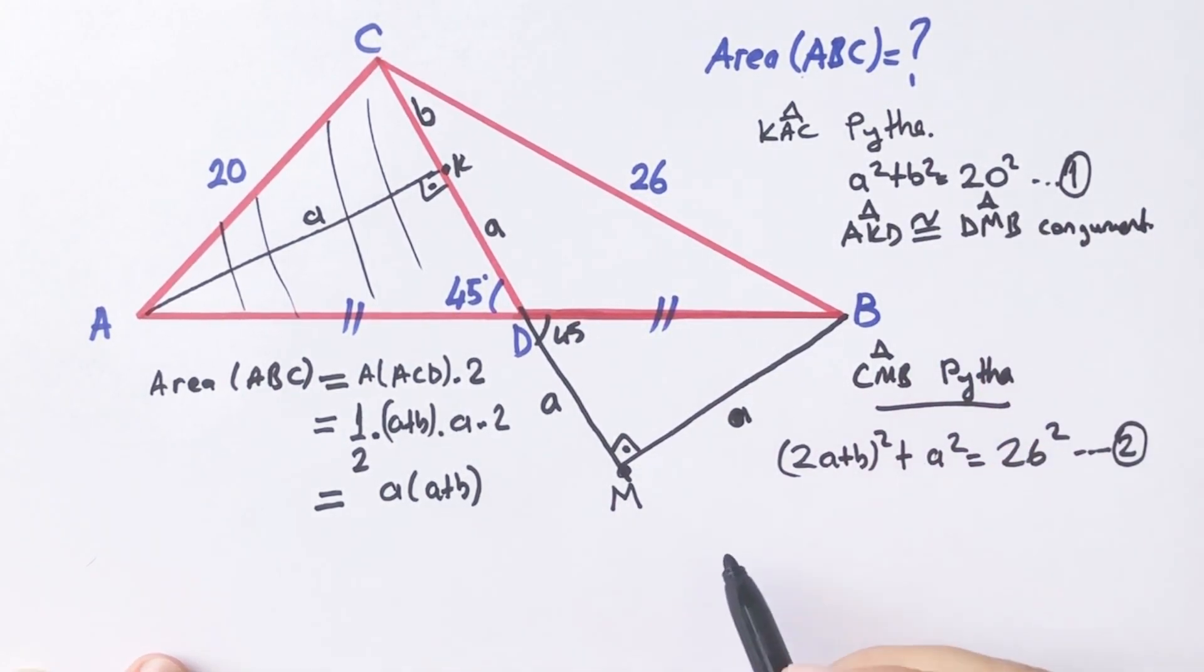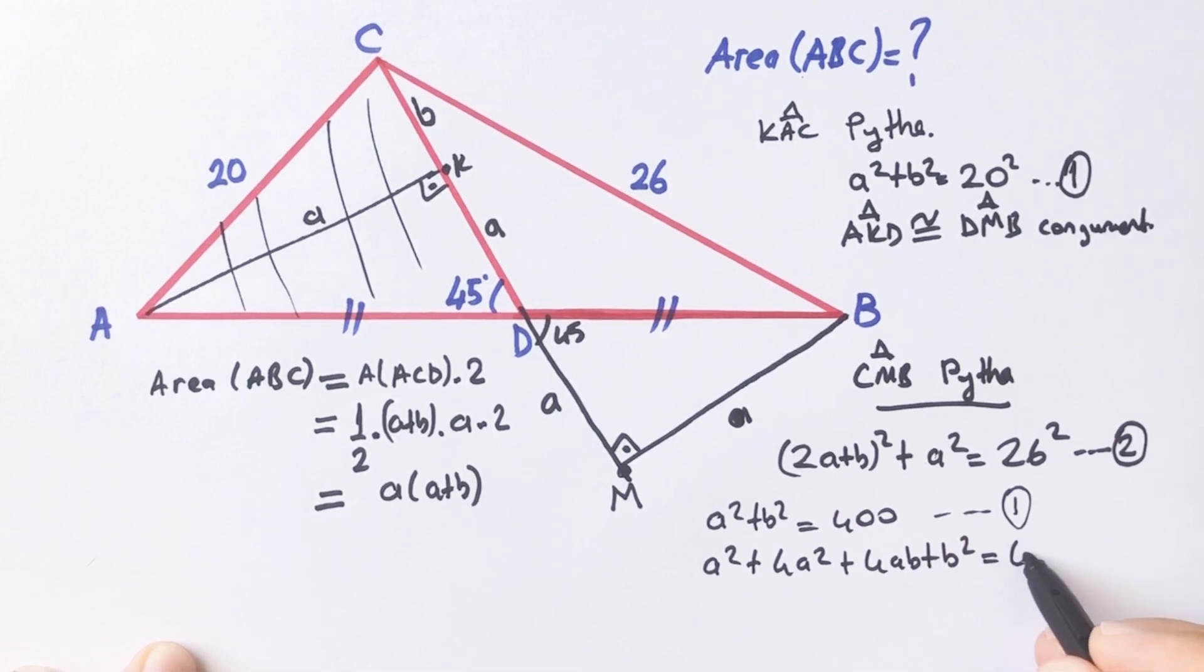If we use first equation, a squared plus b squared equals 400. Second equation, a squared plus 4a squared plus 4ab plus b squared equals 676.